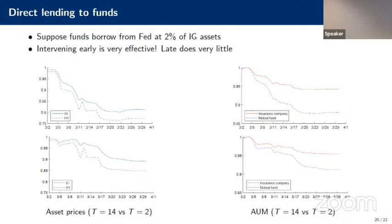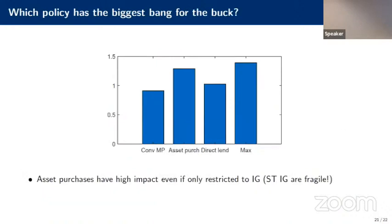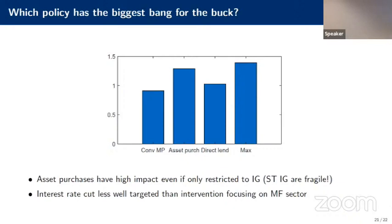How do we compare these policies, which are also of different magnitudes? The model lets us derive an expression that tells us which policy has the biggest bang for its buck, normalizing for the actual dollars spent by the central bank. Comparing the interest rate cut, asset purchases, and direct lending against a theoretical maximum impact benchmark of perfectly targeting the most fragile assets — we find that asset purchases are very high impact, partly because short-term IG bonds are more fragile relative to long-term IG. Conventional monetary policy is less effective than directly intervening in the mutual fund sector.